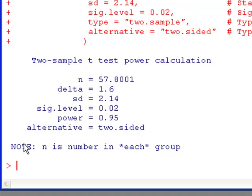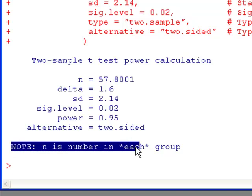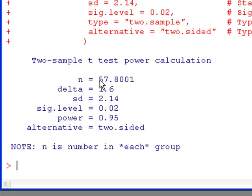It also gives you a note. n is the number in each group. So you're going to have to take a sample size of 58 from population 1 and a sample size of 58 from population 2. So put those together, and you'll realize you have to get a lot of data. So in that case, 116 observations or experimental units.